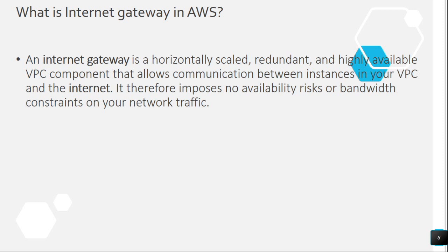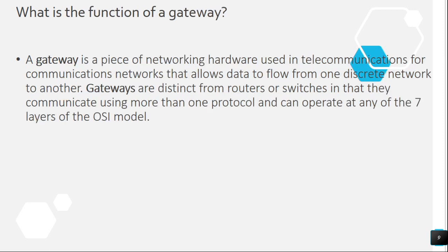Question 7: What is an internet gateway in AWS? An internet gateway is a horizontally scaled, redundant, and highly available VPC component that allows communication between instances in your VPC and the internet. It therefore imposes no availability risks or bandwidth constraints on your network traffic.